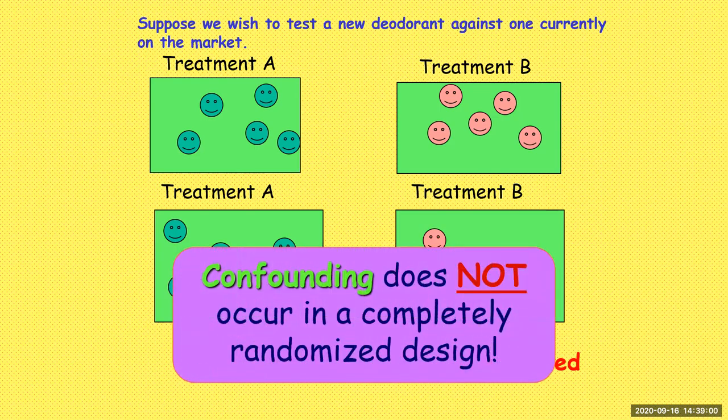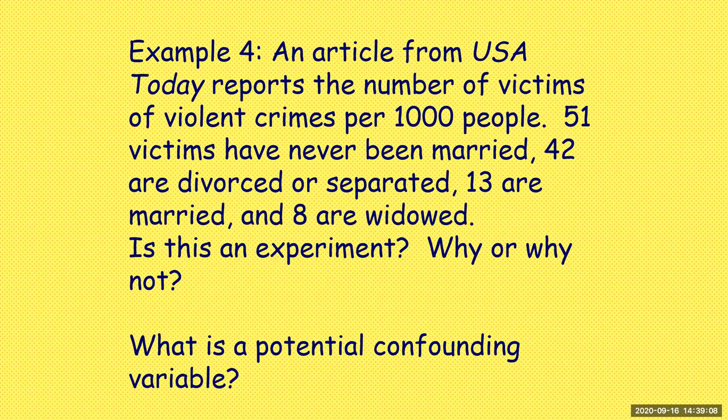Confounding does not occur in a completely randomized design. Just like with simple random sampling, we always want to randomly assign. And you should only block if you think that blocking variable might affect the data.